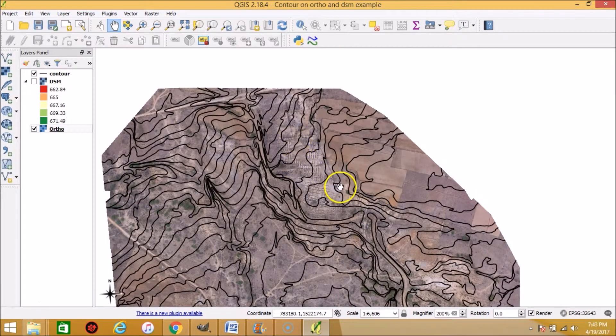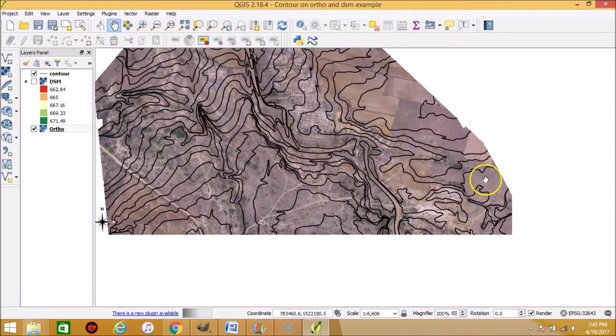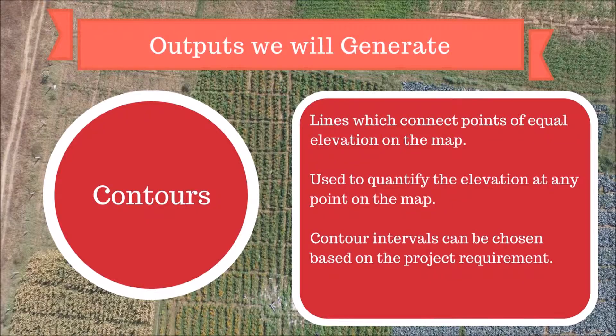You cannot get this kind of visualization with traditional surveying methods. Also, in a drone survey, the contour intervals can be generated as small as 10 centimeters. Creating such contour maps using traditional surveying methods is near impossible.